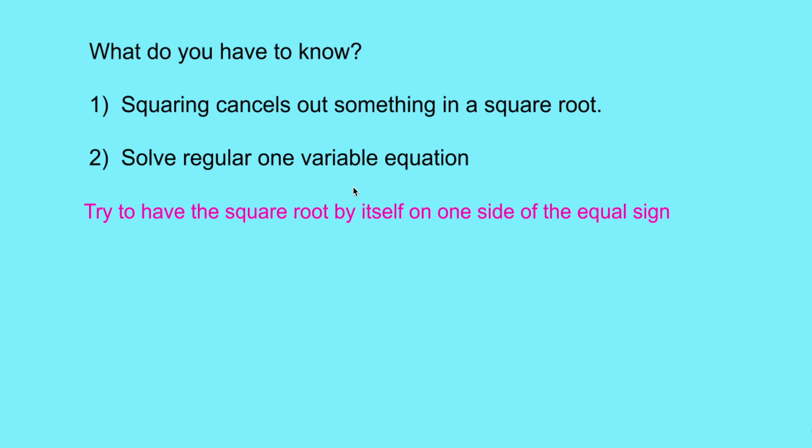Here's what you got to know. One, squaring something cancels out a square root, or vice versa - they're opposites of each other. For instance, let's say I had a square root of x and I square that, then that would just equal whatever's inside. It cancels each other out, so it would just equal x.